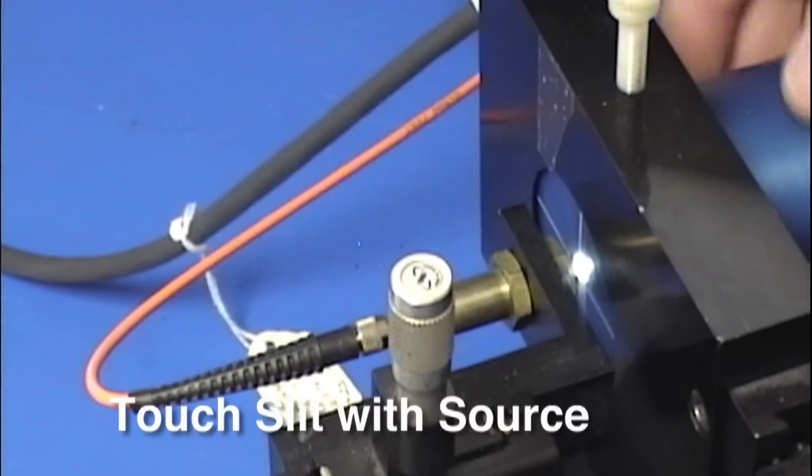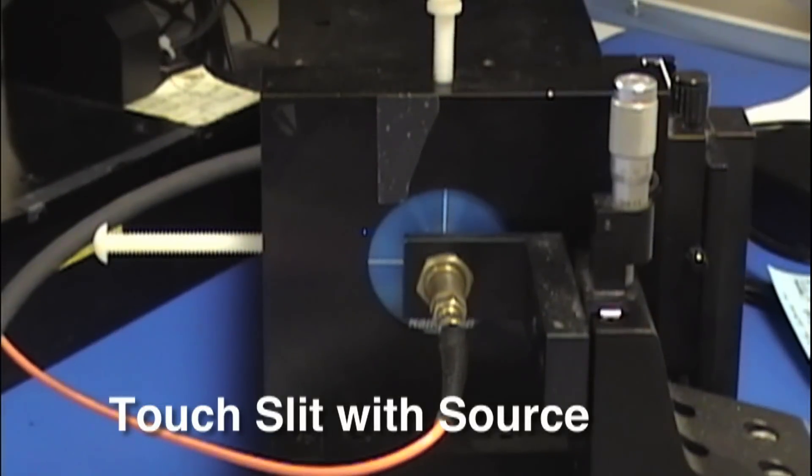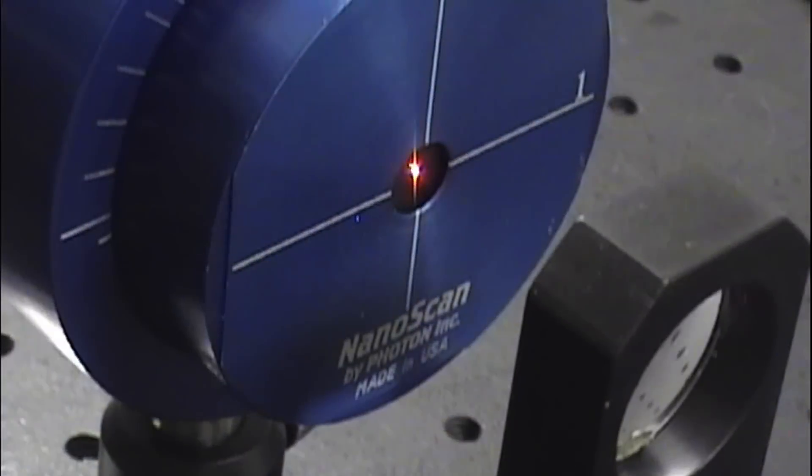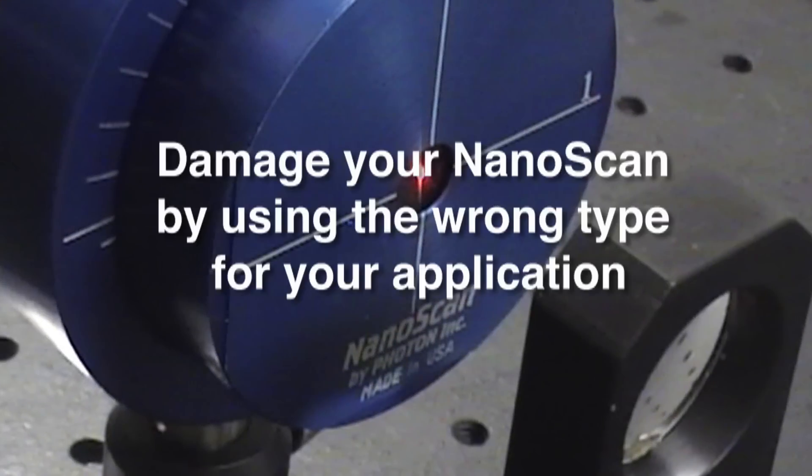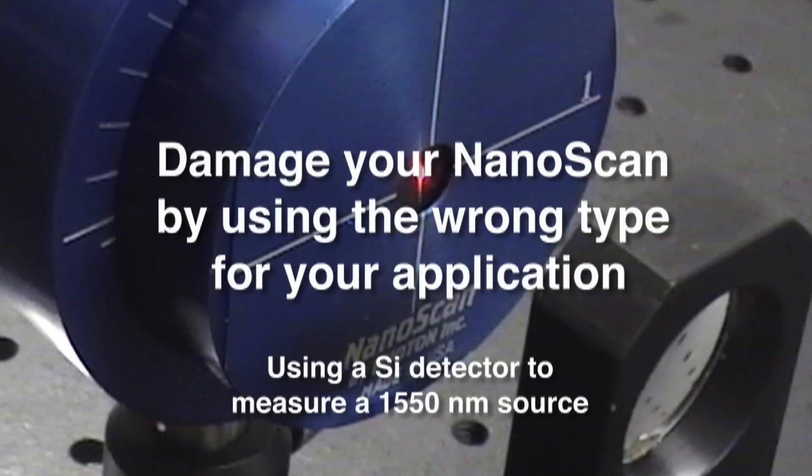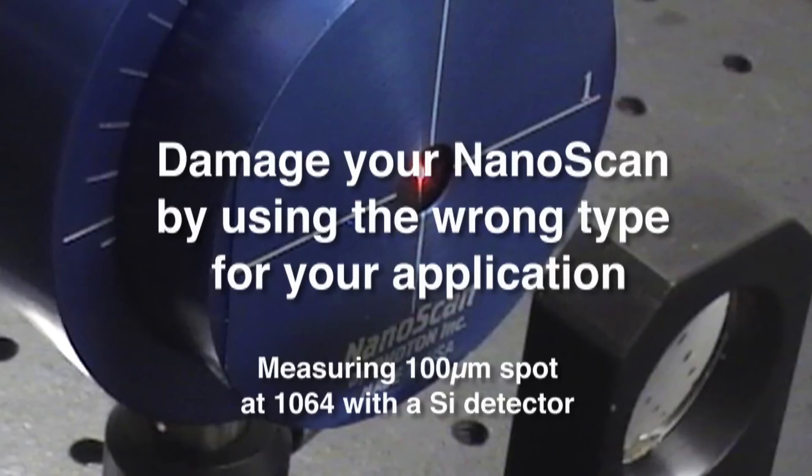Or damaged by positioning a source such as an optical fiber into the slit substrate. The nanoscan unit can be damaged by using the wrong application, such as using a silicon detector to measure a 1550 nanometer source, or measuring a 10 micron spot with a 25 micron slit, or measuring a 100 micron spot at 1064 nanometers with a silicon detector.